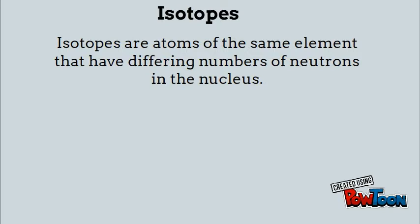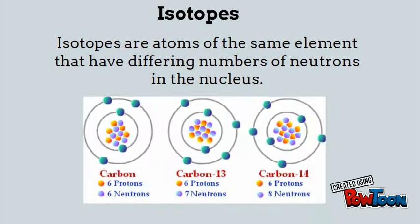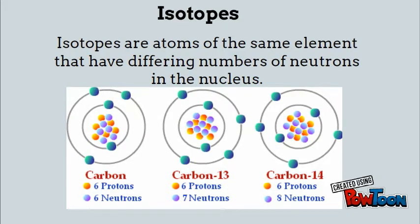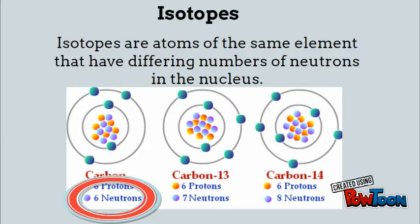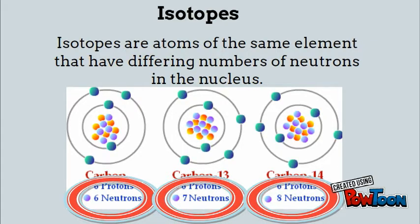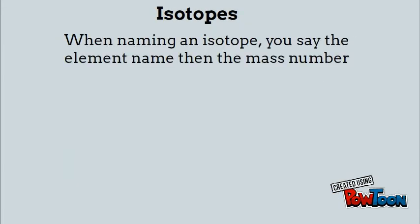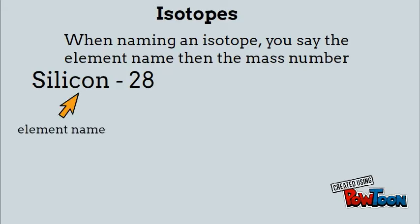Isotopes are atoms of the same element that have a differing number of neutrons inside the nucleus. If we look at carbon, carbon-12, carbon-13, and carbon-14 all have six protons. Carbon-12 has six neutrons, carbon-13 has seven, and carbon-14 has eight neutrons. When naming an isotope, you always say the element name and then the mass number. So for silicon-28, silicon is the element name and 28 is the mass number.